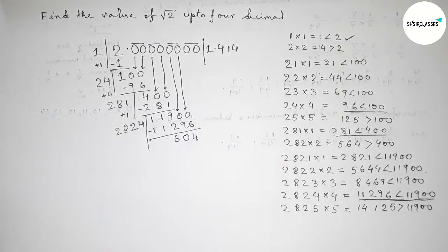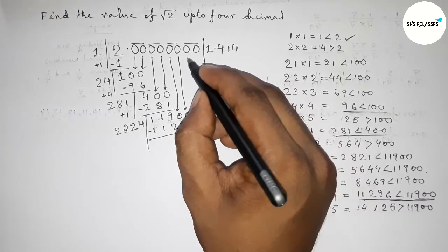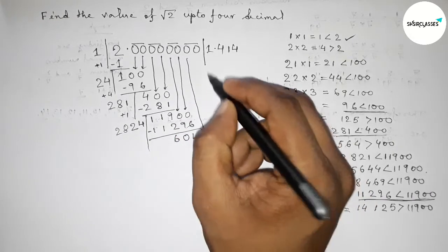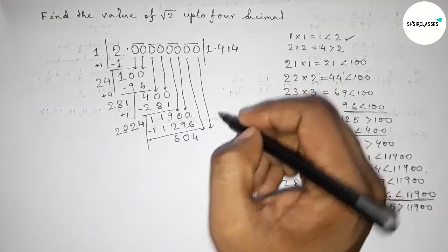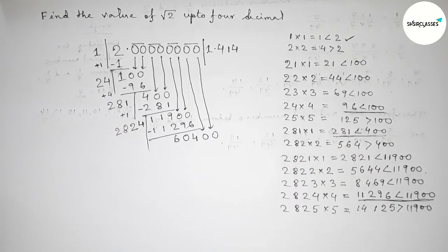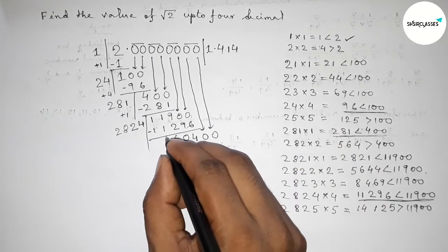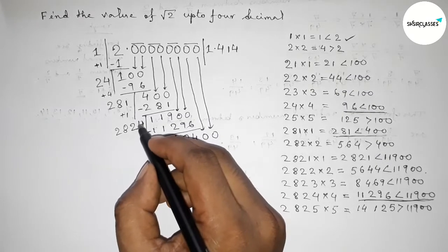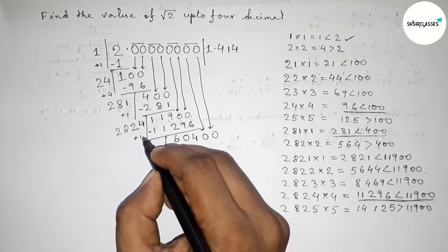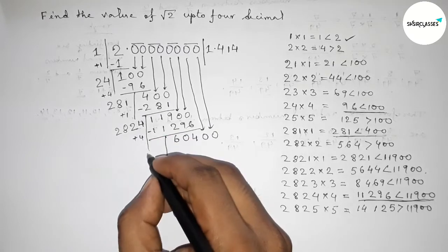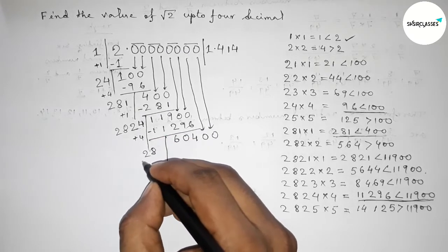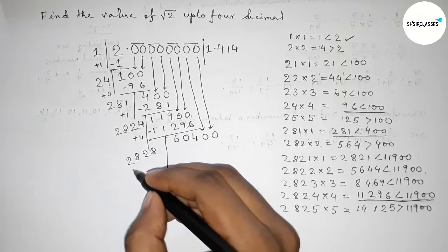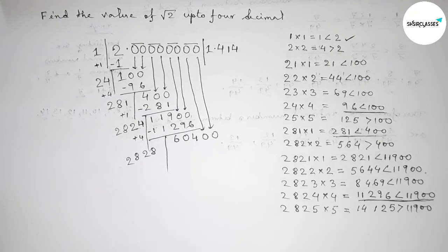Now write down the last remaining pair of zeros, giving 60400. Draw a division line. The last digit of the current divisor is 4, so adding 4: giving 2828. We now have to put a number beside 2828.